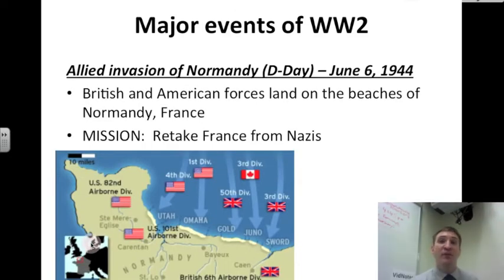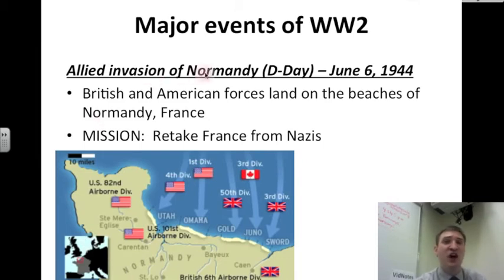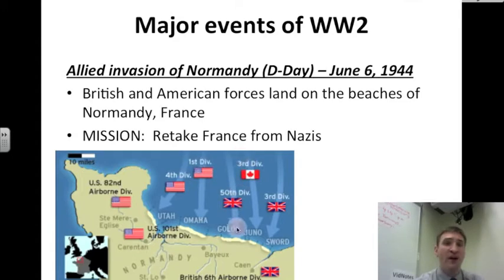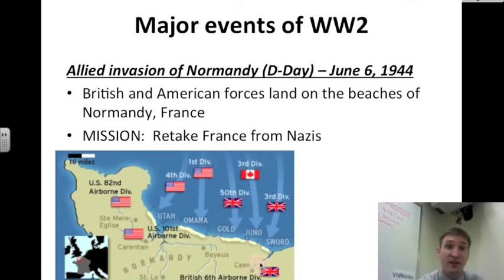Let's go back to Europe. America decides to focus most of its attention on the Nazis first and then Japan. So the Allied invasion of Normandy, also called D-Day, happens on June 6th, 1944. British and American forces land on the beaches of Normandy, France. In this map, you see arrows pointing to where the Americans, British, and Canadians land. This is the English Channel — England is on the other side. And here's Normandy, France. The mission is to retake France from the Nazis.